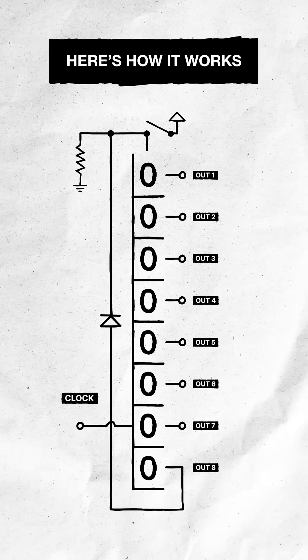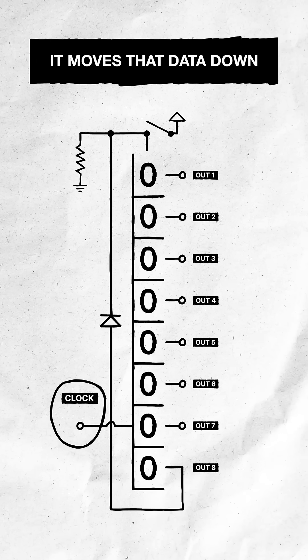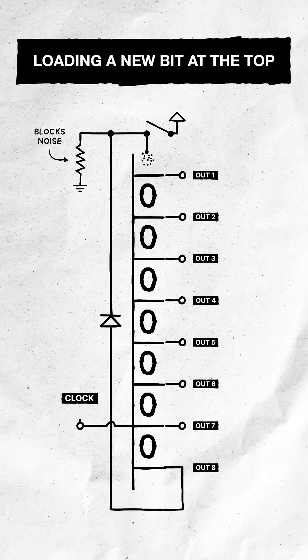Here's how it works. The shift register acts like a conveyor belt for binary data. On every clock pulse, it moves that data down by one slot, loading a new bit at the top.